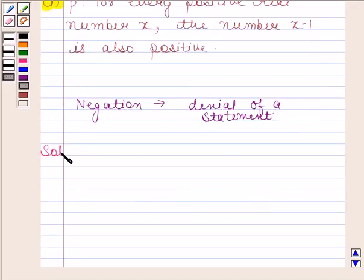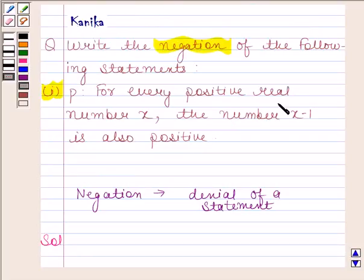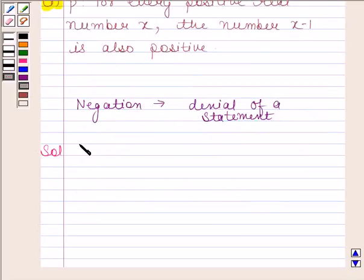Now, here the given statement is, for every positive real number x, the number x minus 1 is also positive. The negation of the statement is,